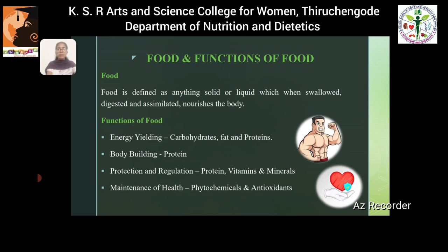The next function is bodybuilding. Foods which are rich in proteins are called bodybuilding foods, which help us for our muscle growth. The third function is protection and regulation. Foods rich in phytochemicals and antioxidants help us to maintain our health, because antioxidants help us to prevent against degenerative diseases like cancer and heart diseases by preventing cell damage.